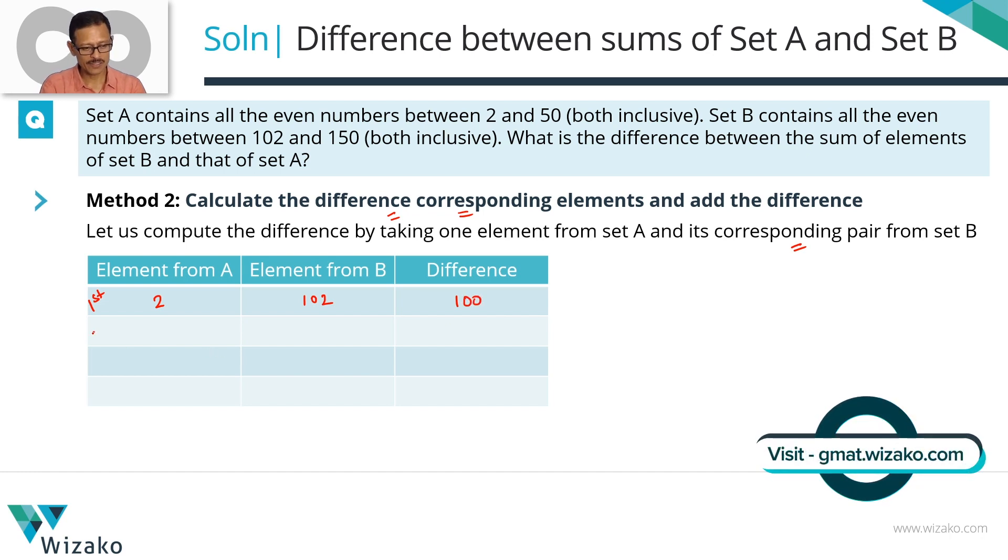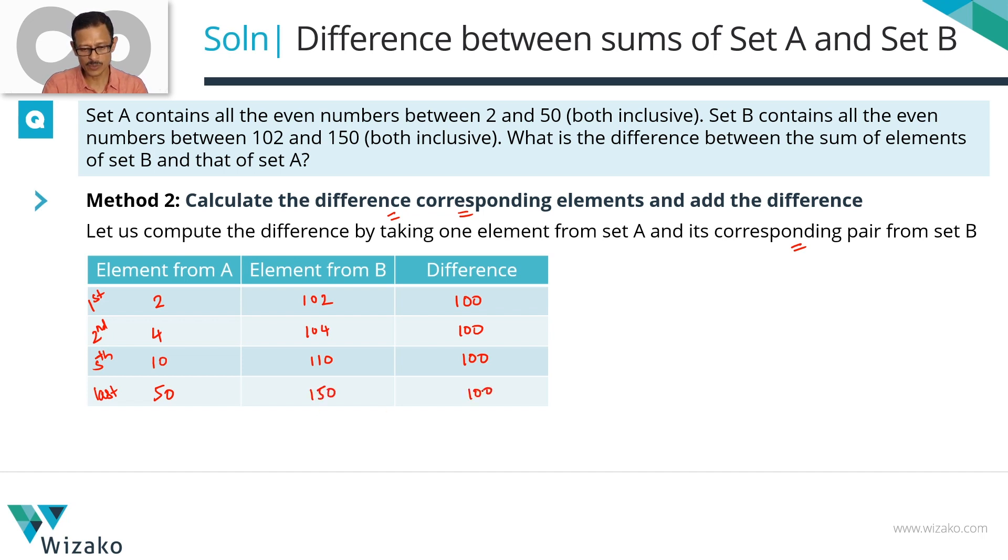Let's pick the second element. Second element of set A is 4. Corresponding element here is 104. The difference is 100. Let's go to the fifth element. We'll just skip few of them. The fifth element is going to be 10. In this case, it's going to be 110. The difference continues to be 100. Just skip all of them. Go to the last element of set A. Last element of set A equals 50. The last element of set B equals 150. The difference equals 100.